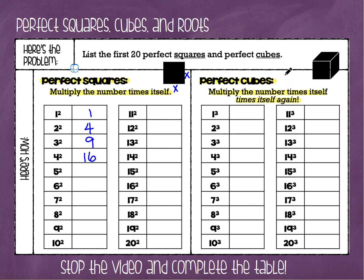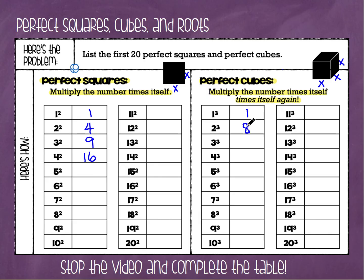Now, for a cube, all of the side lengths are the same — the length, the width, and the height are all the same number. If I have a cube that's 1 by 1 by 1, then 1 times 1 times 1 is 1, so 1 is a perfect cube. If I have side lengths of 2 by 2 by 2, then 2 times 2 is 4, times 2 again is 8, so 8 is a perfect cube.